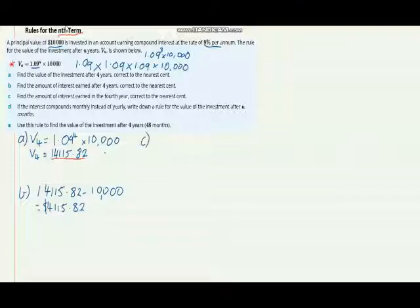Part C: find the amount of interest earned in the fourth year correct to the nearest cent. For this we need to work out the growth. We're going to be looking at the difference between the value of the account in the fourth and the third years, because however much the account gets bigger in that fourth year is the amount of interest earned in the fourth year.